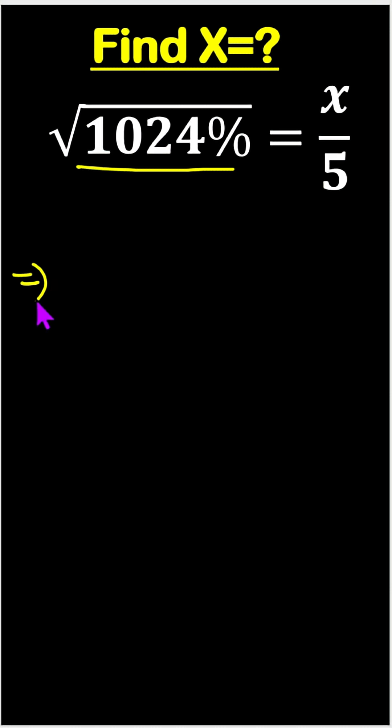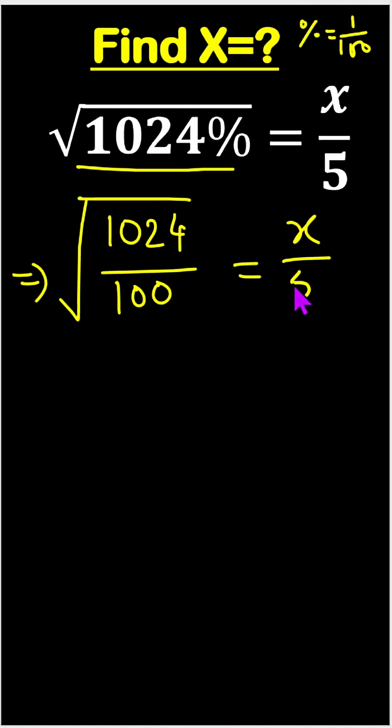We know percent means 1 by 100. Therefore, 1024 percent means 1024 divide 100, and square root equals to x by 5.